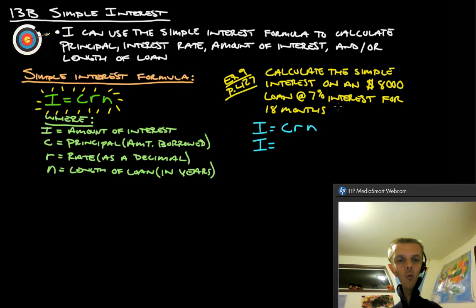So, the interest is going to be C, which is the original amount, so that's $8,000, times the rate, which is 7%, so that as a decimal is 0.07, and then times the number of years, not the number of months, but the number of years. So, 18 months is one and a half years.